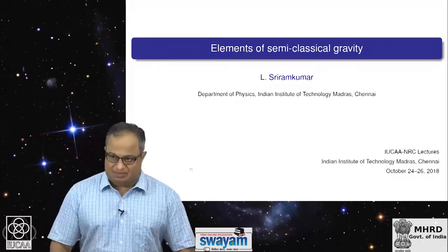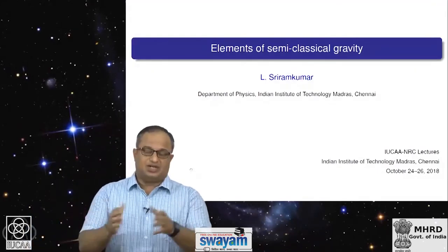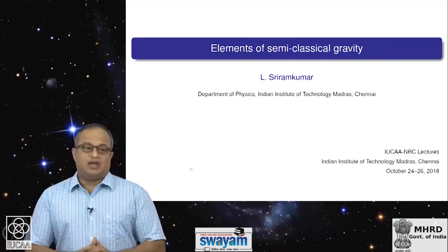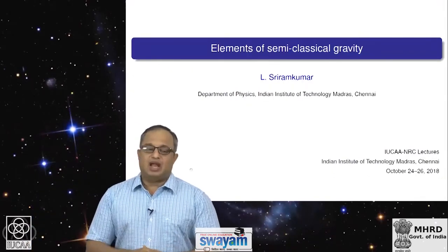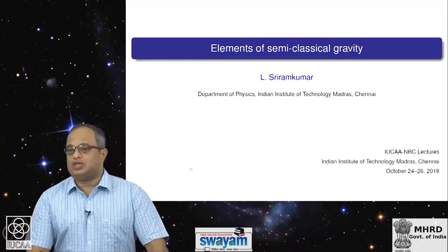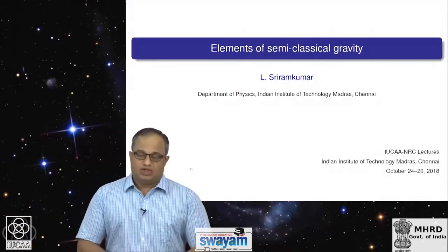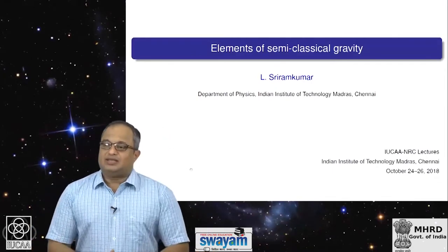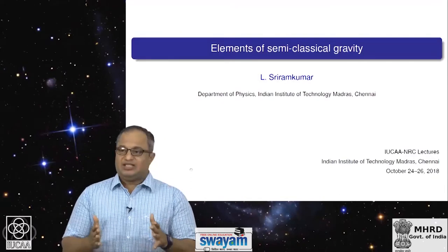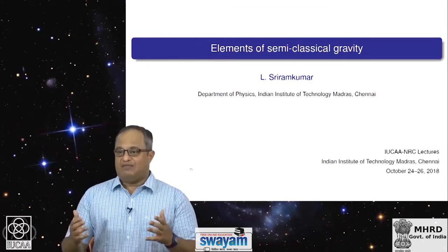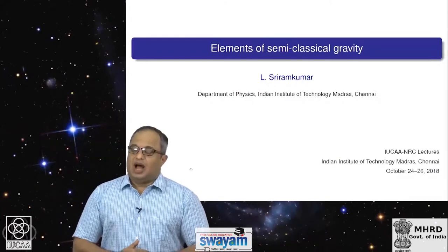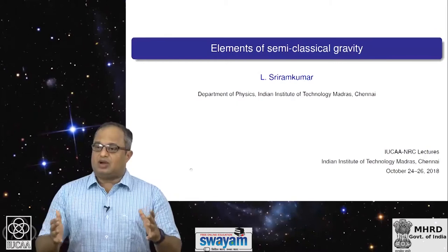The Casimir effect occurs when you have conducting plates kept in the vacuum, and what one finds is that there is a certain attraction between the plates even in the vacuum. Another phenomenon occurs in an electromagnetic background: if you have a sufficiently strong electric field, there can be pair production of electrons and positrons even in the quantum vacuum — this is known as the Schwinger effect. Similar phenomena also occur in a gravitational background. The Casimir effect is referred to as vacuum polarization, and the second phenomenon is referred to as particle production.